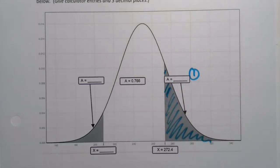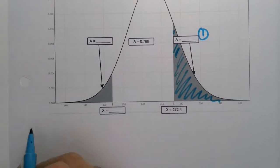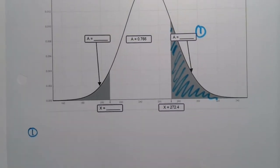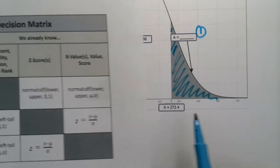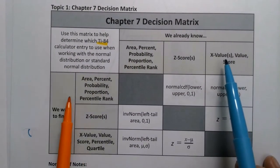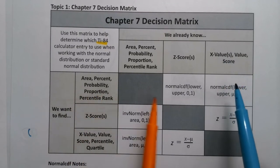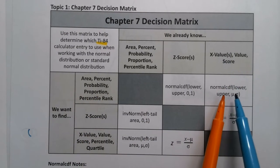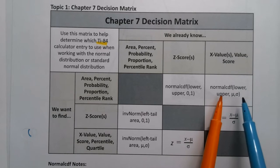And we're going to find that area. Well, how do we do it? Let's go back to the decision matrix. We know an x value, so we already know an x value. We are looking for an area. We're looking for a probability. So we'll use normal CDF, lower, upper, mu, sigma.